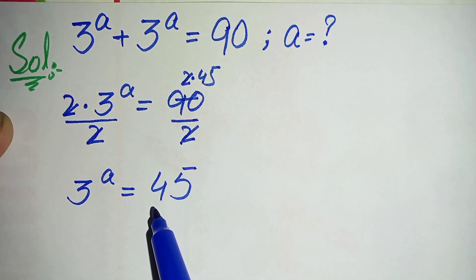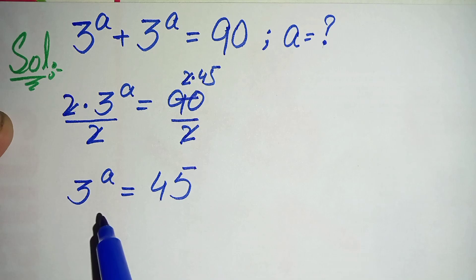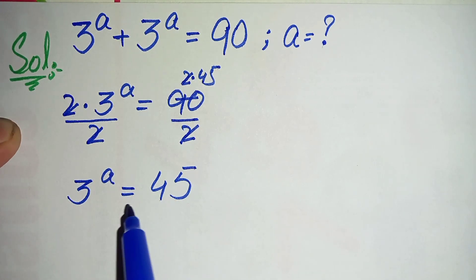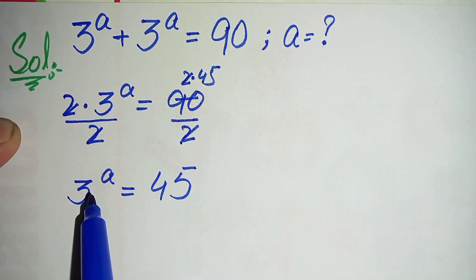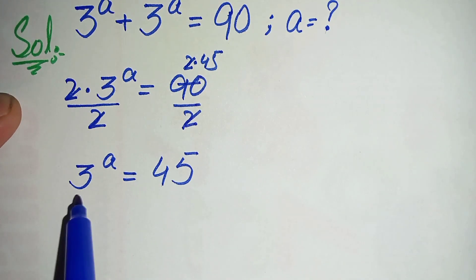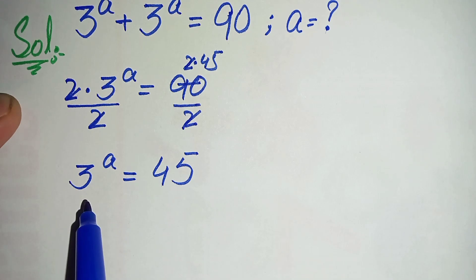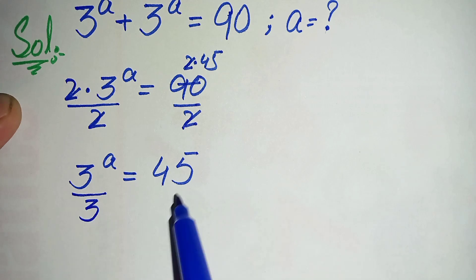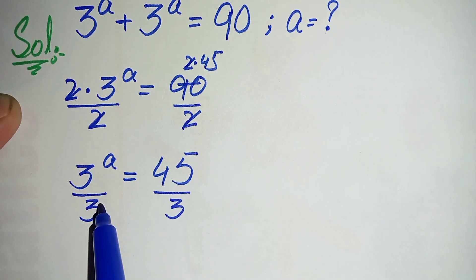How can we solve this equation further? We can solve it by two methods: one is to directly take log on both sides, but another way is to divide both sides by the base which is 3. Let us try the second method and divide both sides by 3.